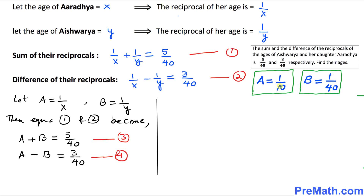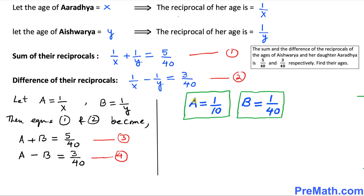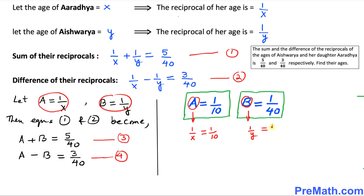We now have A = 1/10 and B = 1/40. Since A = 1/X, we get 1/X = 1/10, so X = 10. Since B = 1/Y, we get 1/Y = 1/40, so Y = 40.